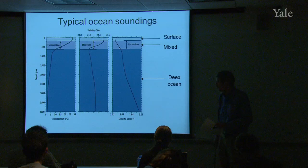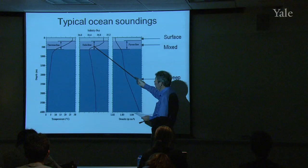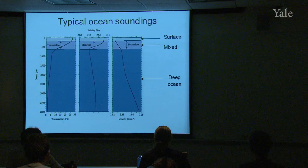The word pycnocline is used when you're referring to this gradient region as it applies to density. So here it's the halocline, referring to the salt. There the thermocline, referring to the temperature. The pycnocline refers to that combined quantity, which is the density of the water.